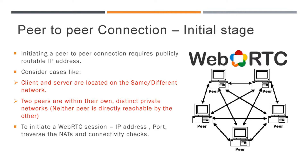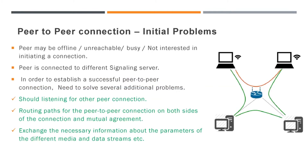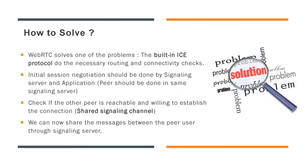Another possible scenario is that a peer may be offline or unreachable, busy, or not interested in initiating a connection. But to initiate a session, we must first gather the possible IP address and port details — this is mandatory for a WebRTC connection. So how can we get rid of these problems? How does WebRTC solve them? Here comes the ICE protocol.